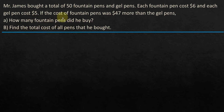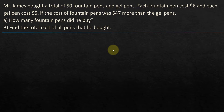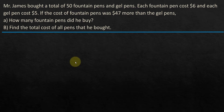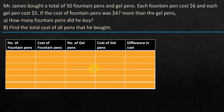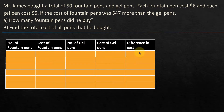And find the total cost of all pens that he bought. We will be using a table method or tabular method to find this out by trial and error, but with a proper approach. So first, let's draw a table with the following columns: number of fountain pens, total number of fountain pens, the cost of that number of fountain pens, number of gel pens, the cost of the gel pens, and the difference in cost between the fountain pens and the gel pens.